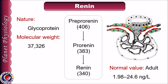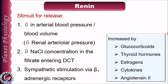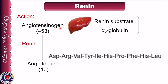The normal value of renin in adults ranges between 1.98 and 24.6 ng per litre. These levels are increased by glucocorticoids, thyroid hormones, estrogens, cytokines, as well as angiotensin 2. The main stimuli for release of renin include decrease in arterial blood pressure or blood volume, leading to decrease in renal arteriolar pressure. Renin is also secreted in response to decreased NaCl concentration in the filtrate entering the DCT, mediated via macula densa. Sympathetic stimulation also releases renin via beta-1 adrenergic receptors. Renin acts as an enzyme and splits angiotensinogen to form angiotensin 1.